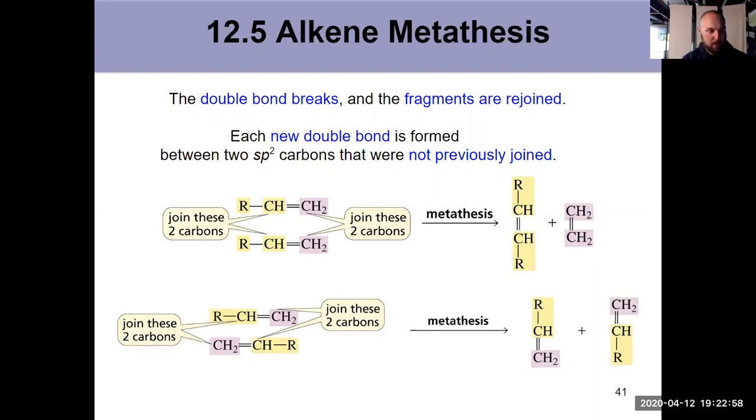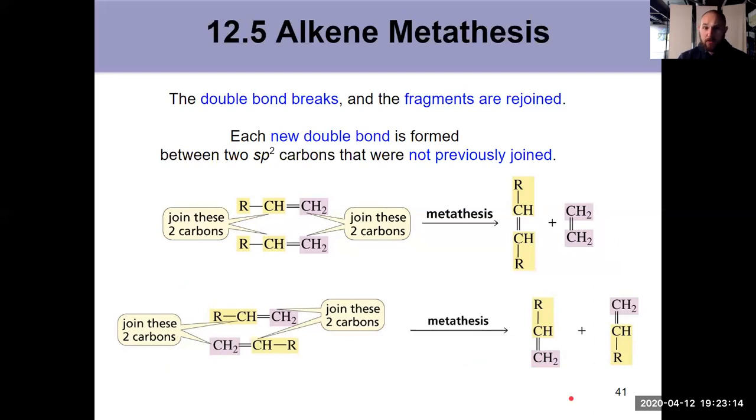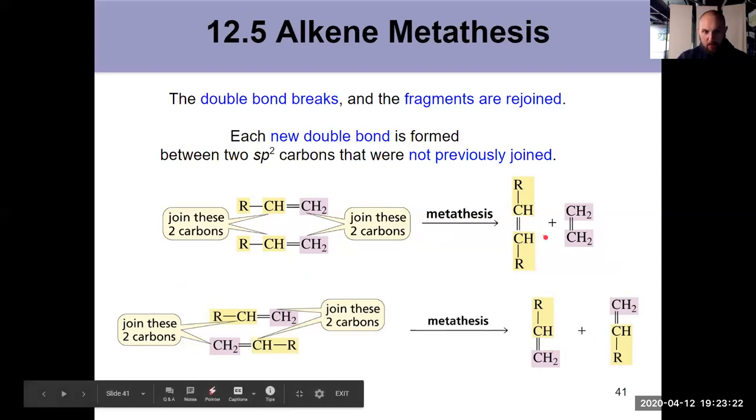And when we do this, break the bonds and put the fragments together, there's two possibilities. In the top route, this is the whole point of the metathesis to get new products. This is what we're hoping to achieve. In the bottom reaction down here, we break bonds, swap partners, but then we actually end up getting the same products. Make sure you're thinking about these things in 3D. But that's fine. We haven't hurt our yield because we can then put these right back into the pot and do the reaction again.